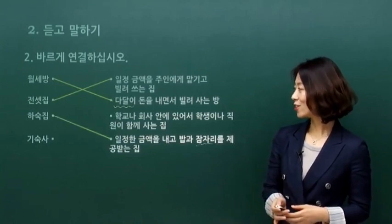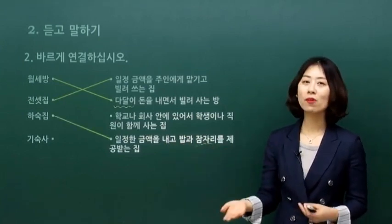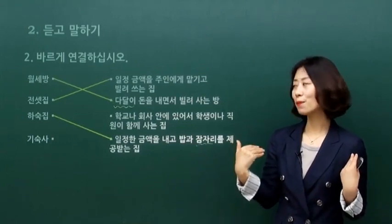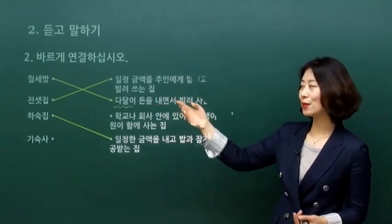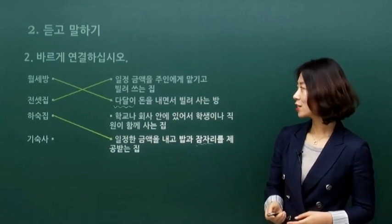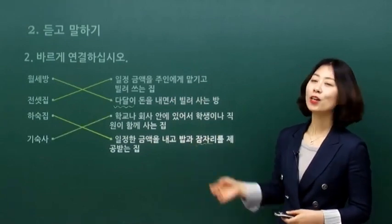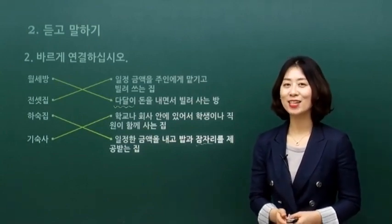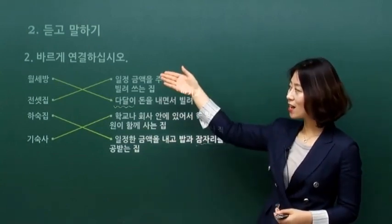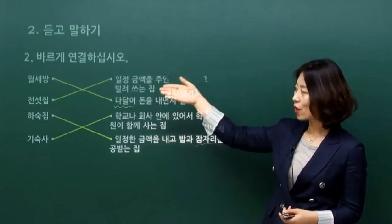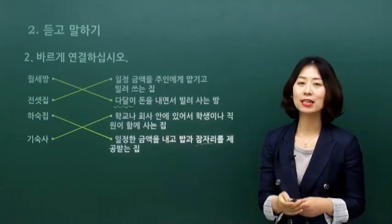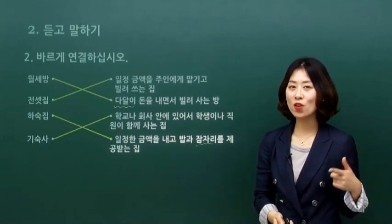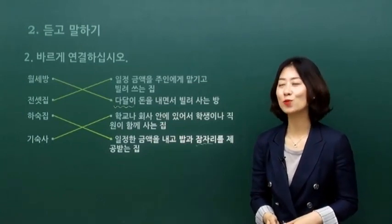하숙집은 일정 금액을 내고 아침, 저녁 식사와 잠자리를 제공받는 집을 말합니다. 기숙사는 학교나 회사 안에 있어서 직원들, 학생들이 같이 사는 집이에요. 아마 듣기에서 이런 내용들의 이야기가 나올 것 같습니다. 기억 잘 해주세요. 특히 전셋집, 월세 이런 단어들 기억해 주시면 좋을 것 같아요.